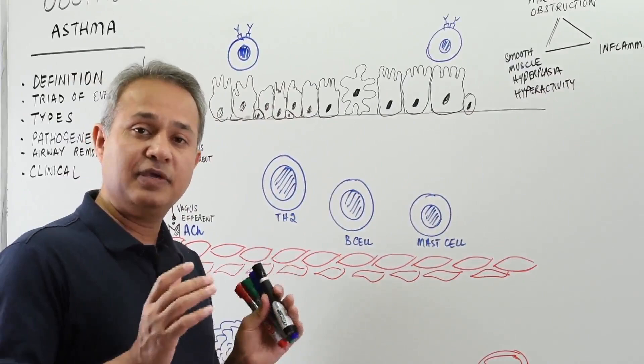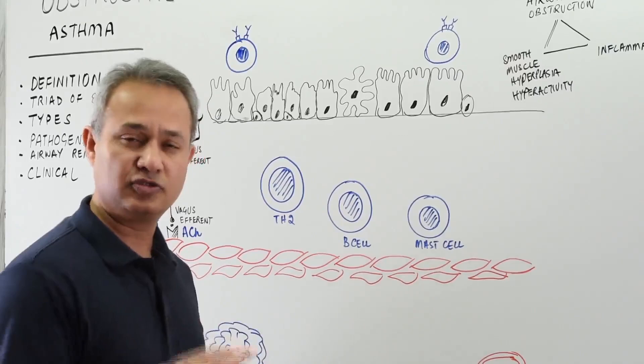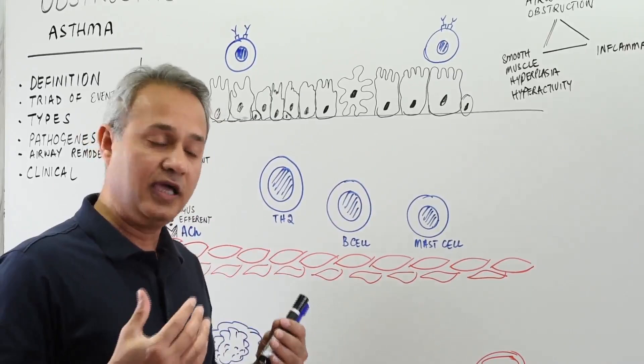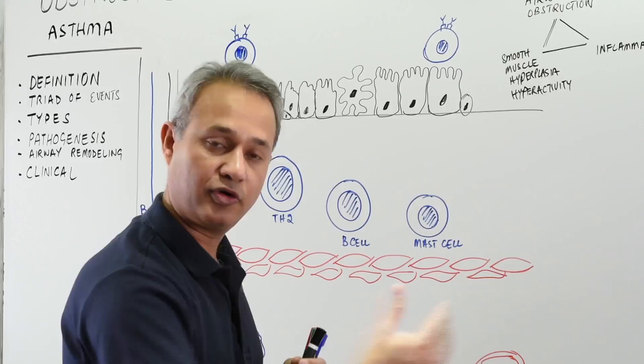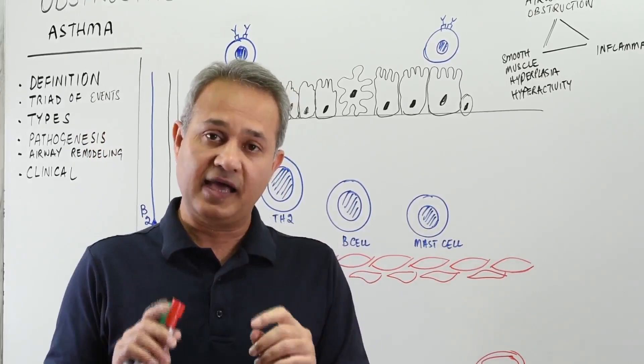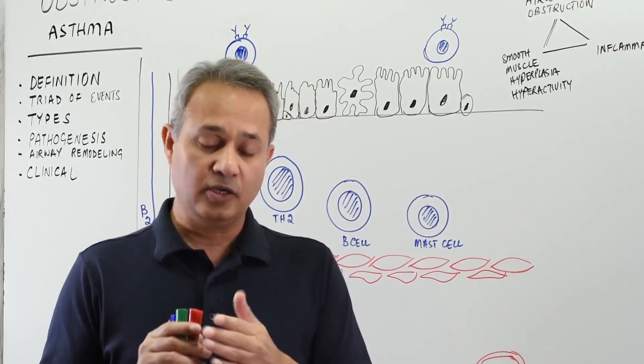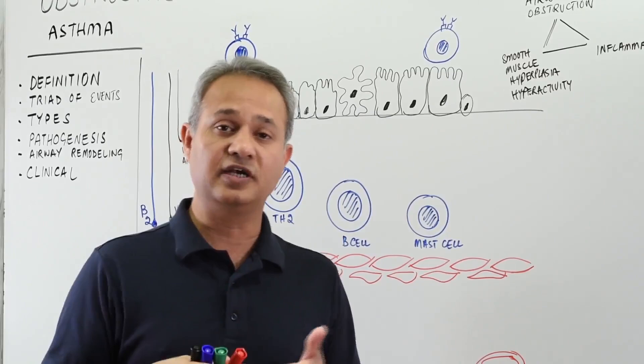Asthma can be phasic. There is an immediate allergic reaction and then a late phase allergic reaction. People may have an immediate asthma attack, become okay, and then a few hours later have a bigger attack that might go on for a day or more. Clinically, asthma is classified as intermittent — about twice a week, going away within a few minutes — or chronic, which is more than twice a week. Status asthmaticus is when the duration is more than a day.